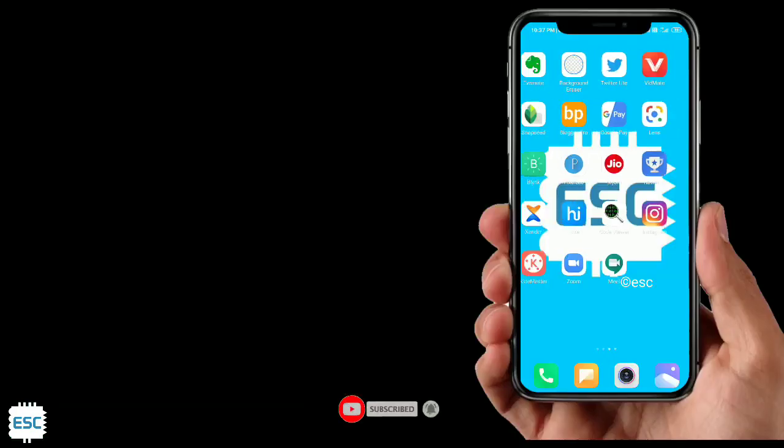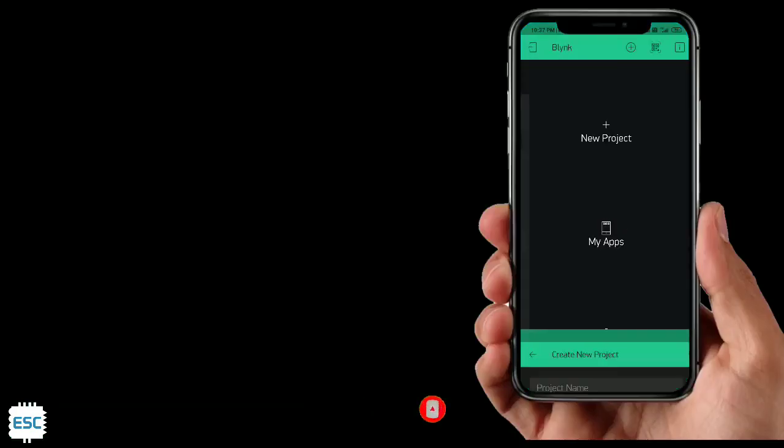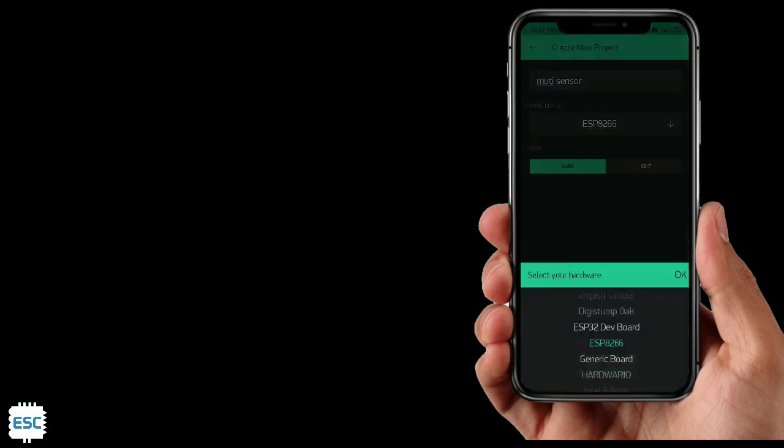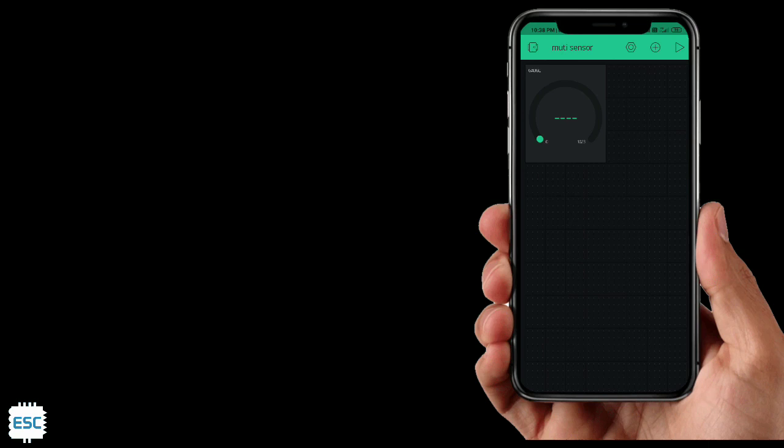After uploading the code, let's set up the Blynk app. Open Blynk app and click on new project, add name and select board as NodeMCU and select two gauge buttons.